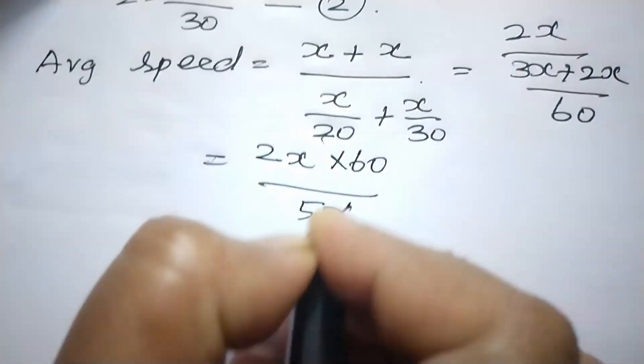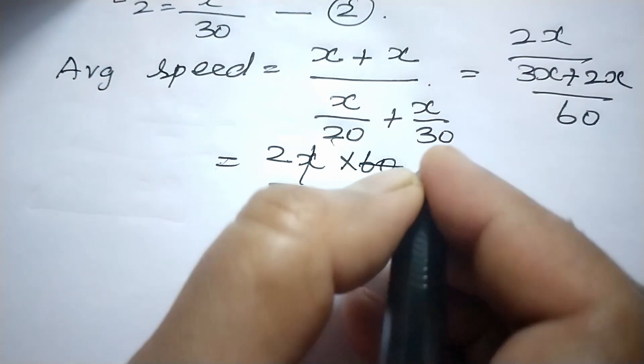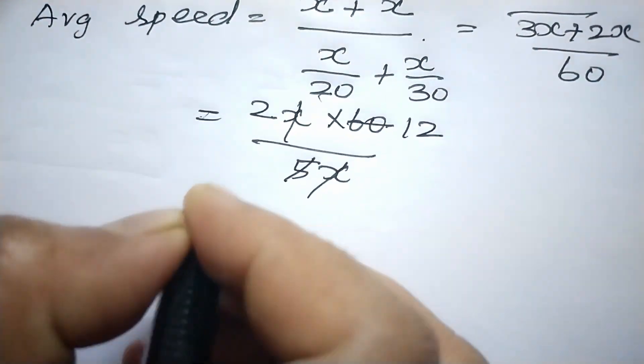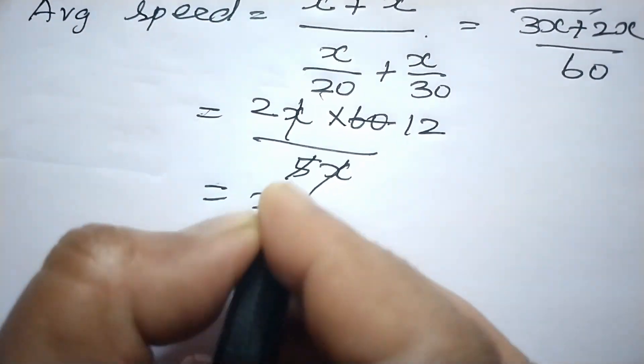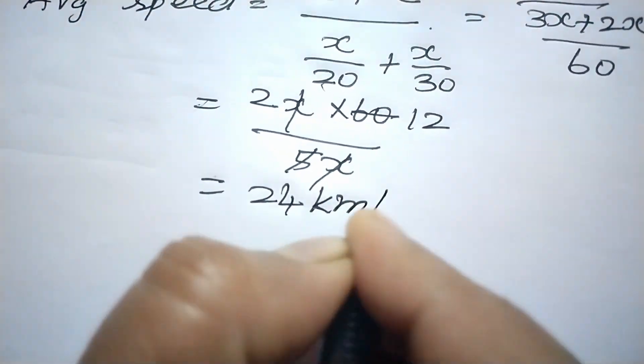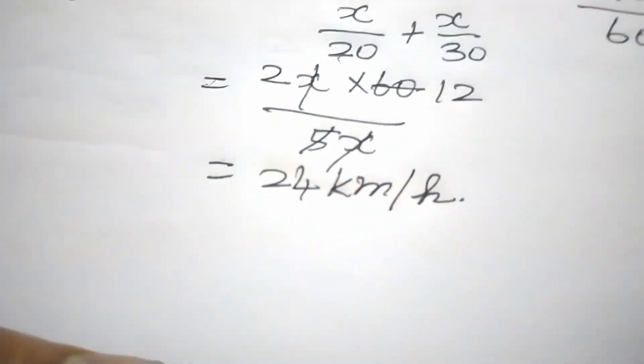The x cancels out, giving 2x × 60 divided by 5x = 120 / 5 = 24. So the average speed is 24 km per hour.